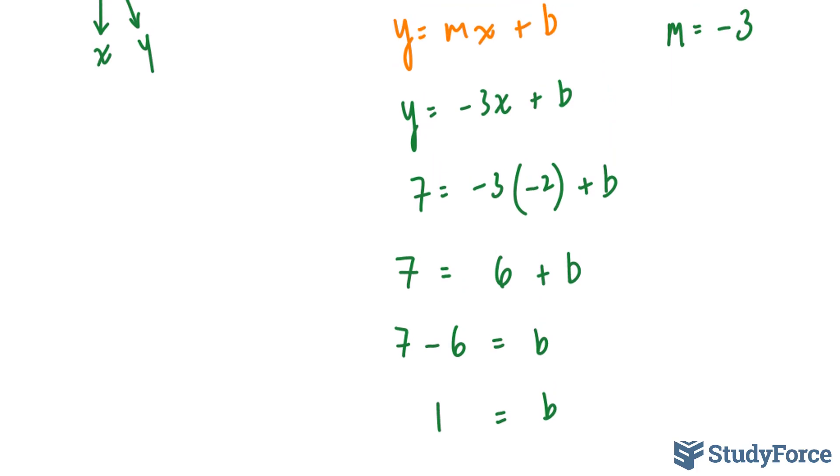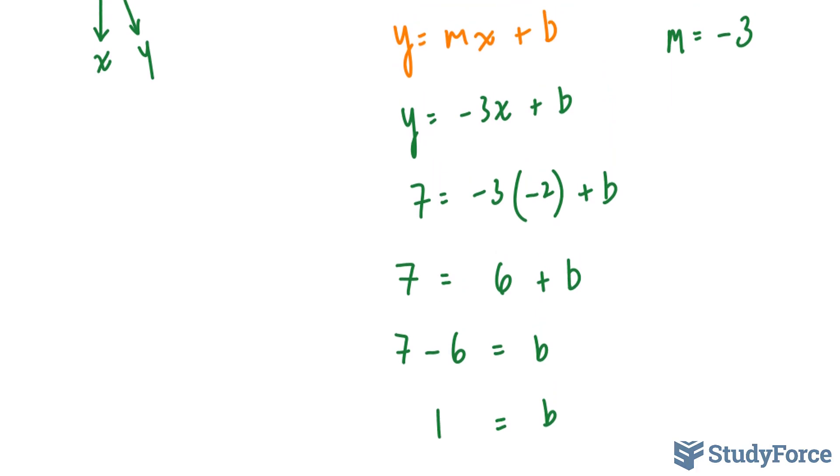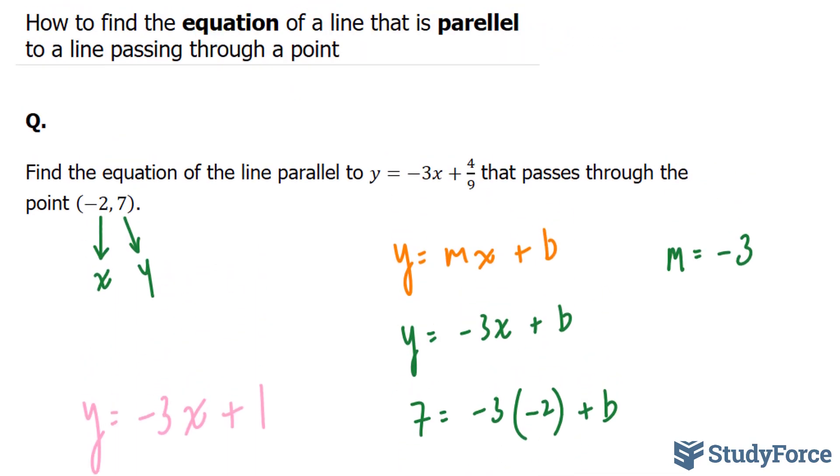So now that you've found all the elements that you need, you can create an equation: y equals negative 3x plus 1. And there you have it. That is how to create an equation of a line that is parallel to another line passing through a random point.